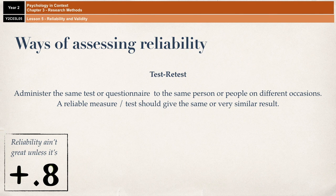There has to be enough time between a test and a retest — long enough for you not to remember your previous answers, but also not so long that people's attitudes may have changed. The results of the original test and the retest are then compared and correlated. If the correlation is significant and positive, then the reliability is assumed to be good. Reliability is assumed to be good if the correlation is at least positive 0.8.